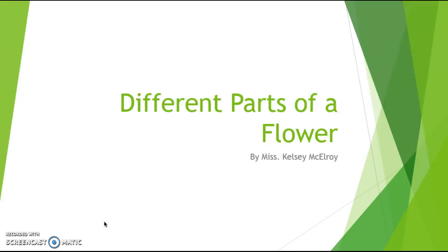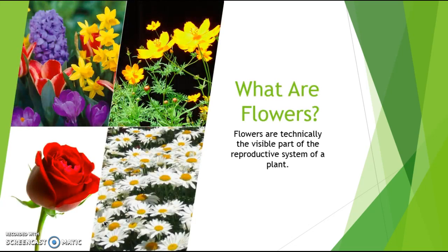Today we are going to discuss the different parts of a flower. Flowers are the visible part of the reproductive system of a plant. We're not going to be discussing the entire plant today, just the flower.